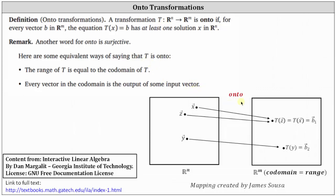Notice this satisfies the condition that every vector in the codomain is the output of some input vector. Looking at this in terms of equations: T(x) = T(z) = b_1, which has two solutions, vectors x and z. And the equation T(y) = b_2 has one solution, vector y. All equations T(x) = b have at least one solution — in this case, one or two solutions.